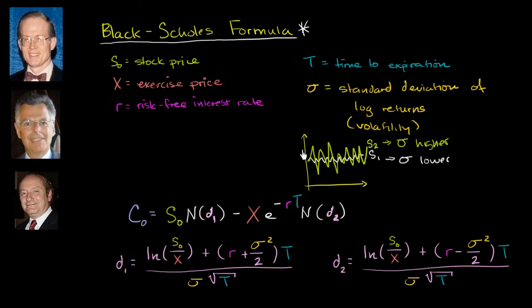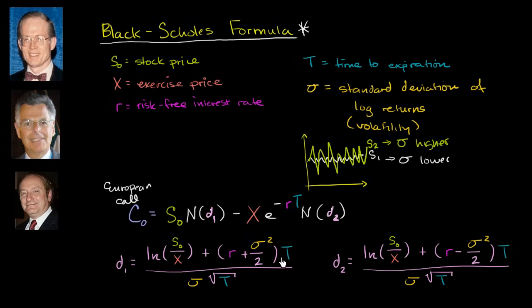Now let's actually look at the Black-Scholes formula. The variety I have here is for a European call option. We could do something very similar for a European put option. Remember, a European call option is mathematically simpler than an American call option in that there's only one time at which you can exercise it — on the exercise date. On an American call option, you can exercise it at any point. With that said, let's try to intuitively dissect the Black-Scholes formula a little bit.